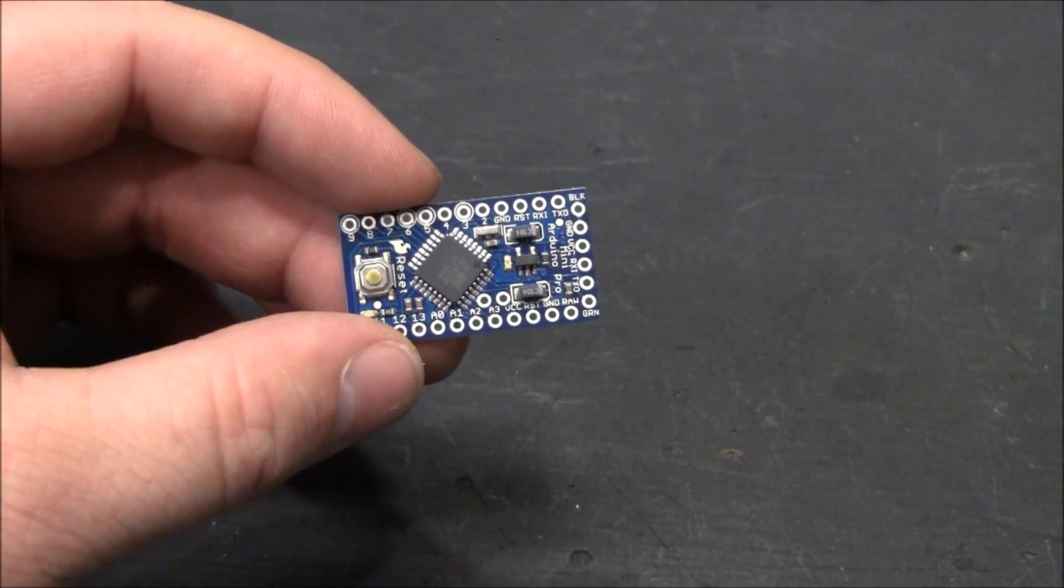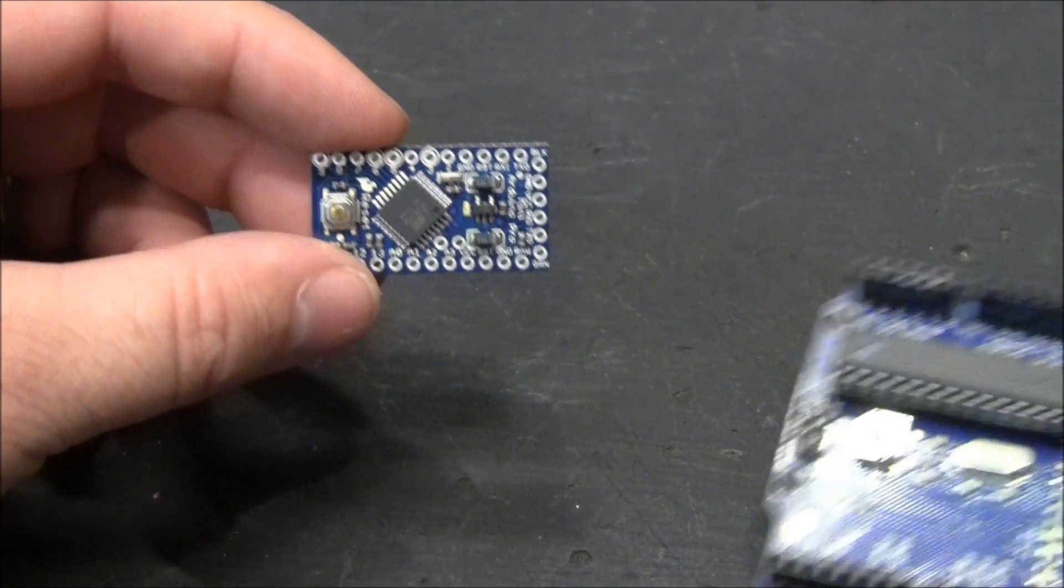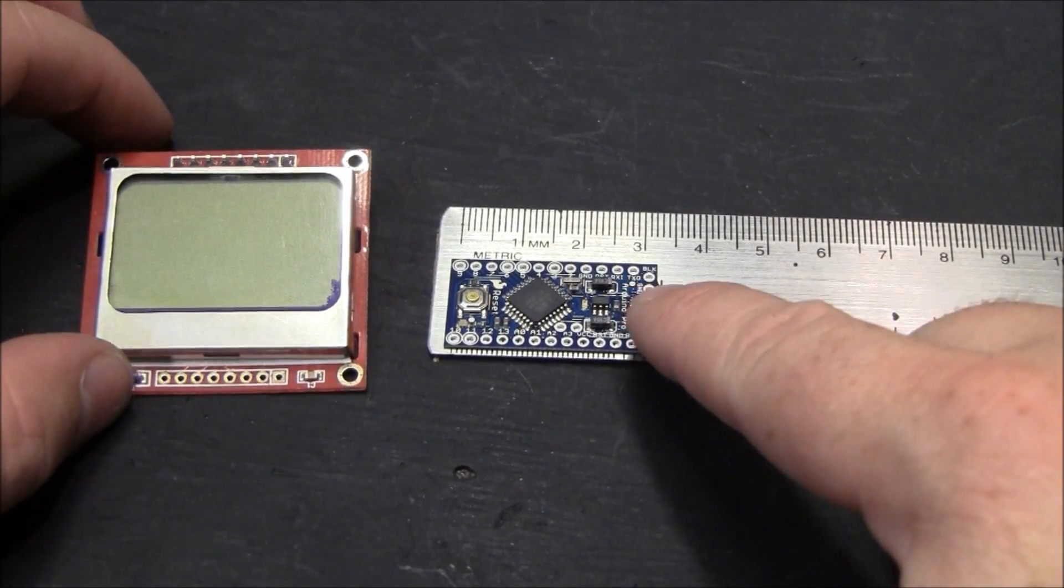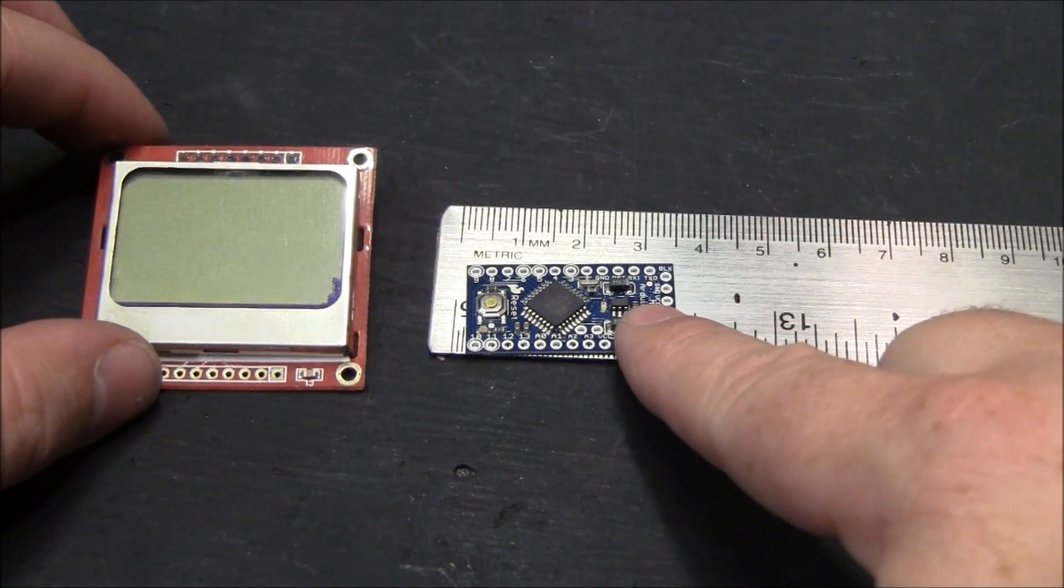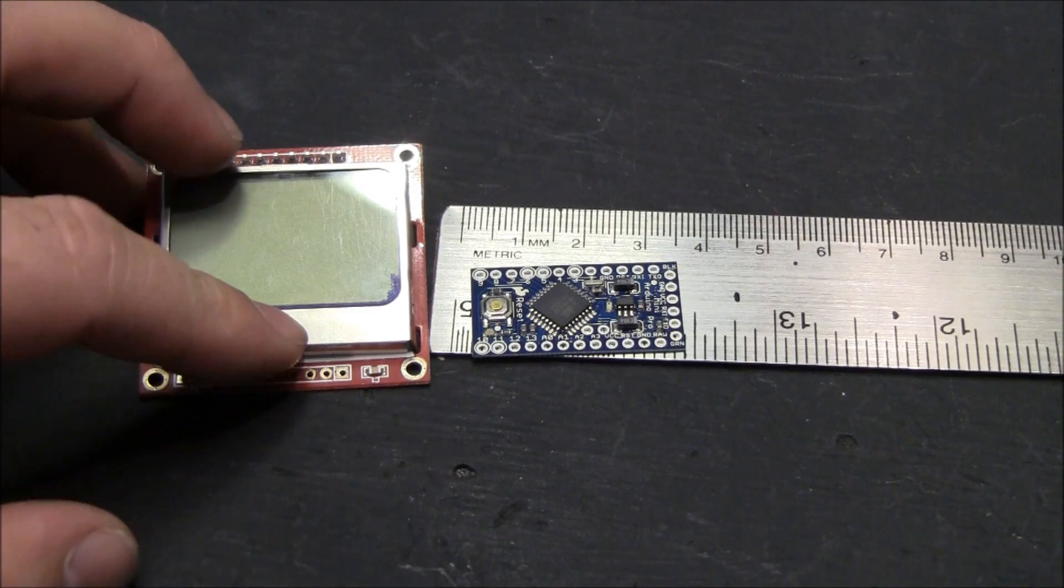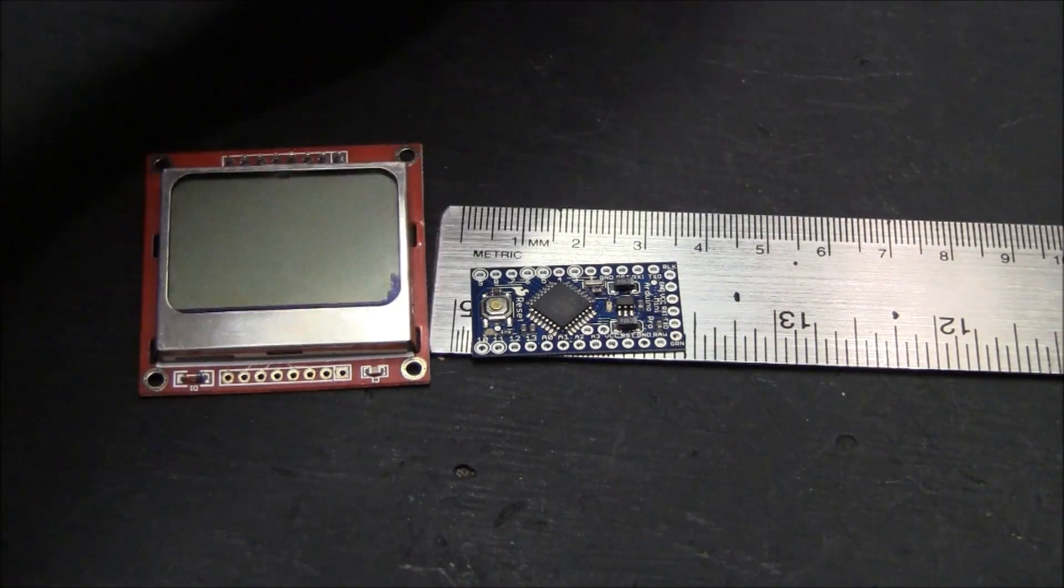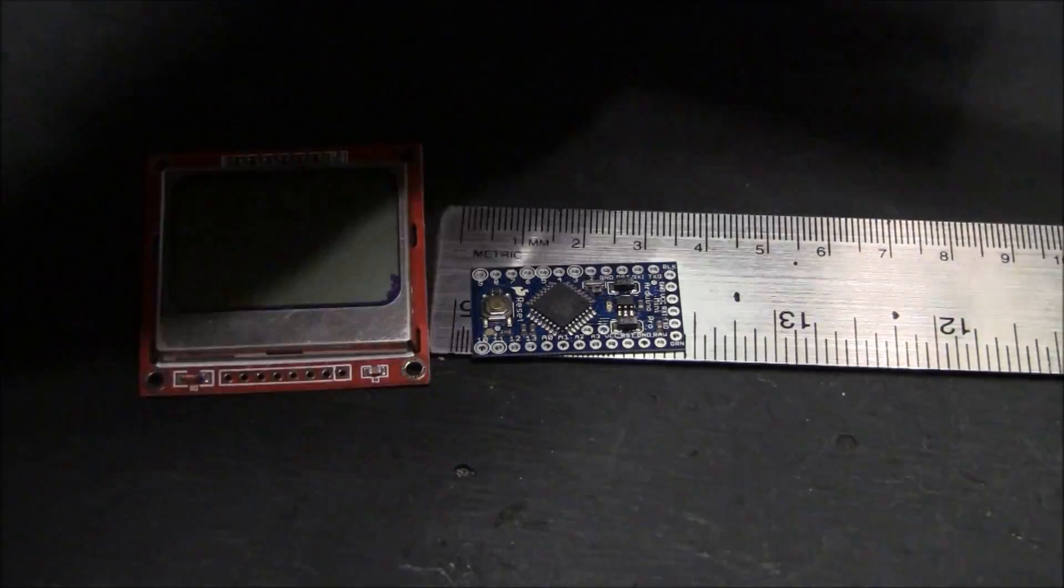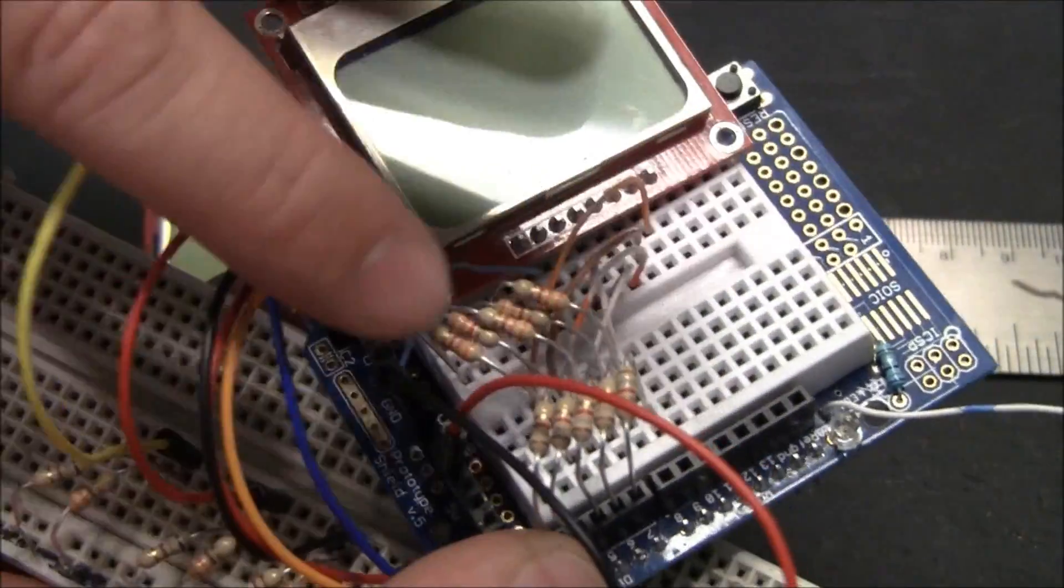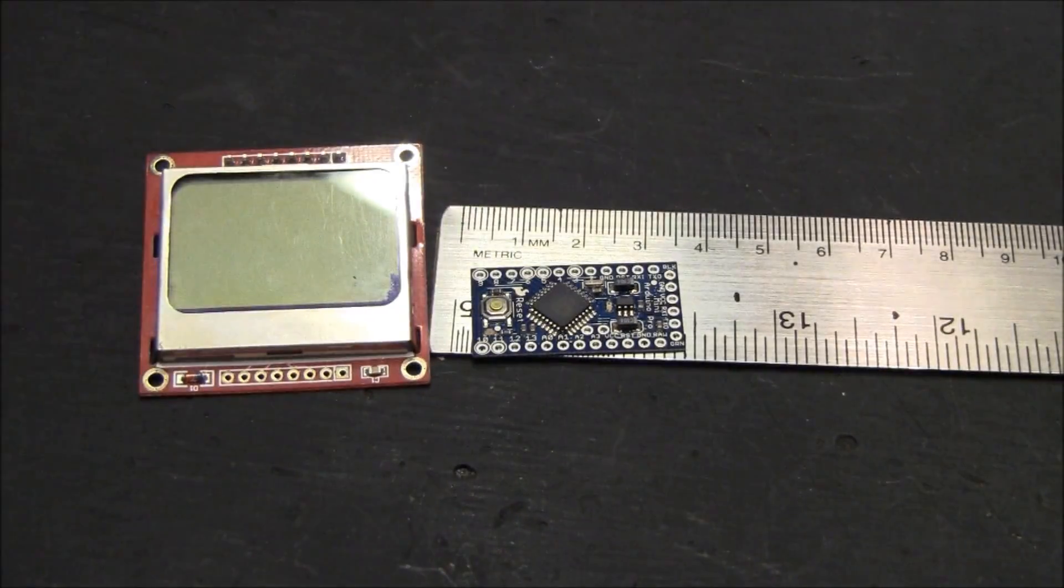The Arduino Pro Mini, the 3 volt version. Just so you get an idea of size. So the reason I went with this is because it's a 3 volt version. This LCD screen is 3 volts and if you want to use a regular Arduino to run it, you have to step it down. Voltages, control voltages from 5 volts to 3 volts, either using resistors or...